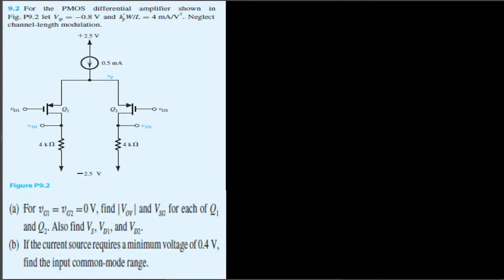Part (a) is asking: given Vg1 equals Vg2 equals zero volts, find the overdrive voltage Vov and Vsg for each transistor Q1 and Q2. Also find Vs, Vd1, and Vd2.